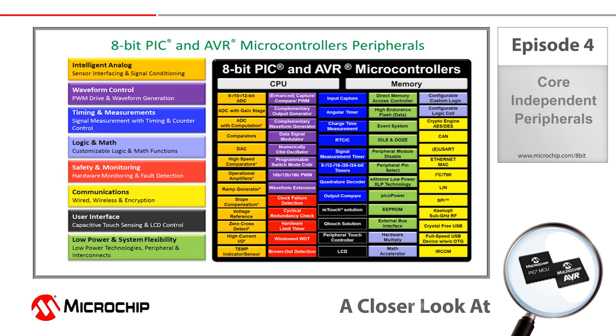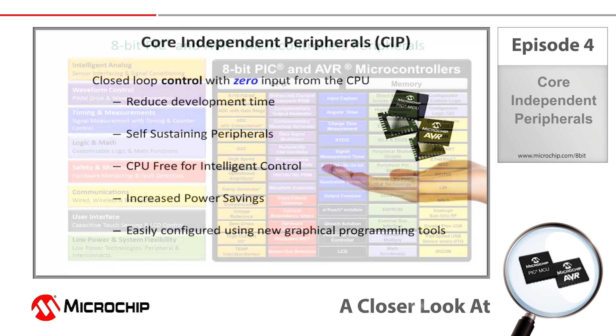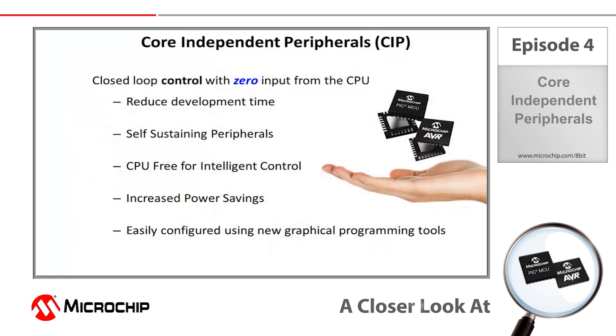These Core Independent Peripherals have inherent advantages like reducing the amount of code that a developer needs to write while at the same time helping to create a more responsive and lower power system. What I want to do in this video is give you a general idea of what Core Independent Peripherals bring to an application.